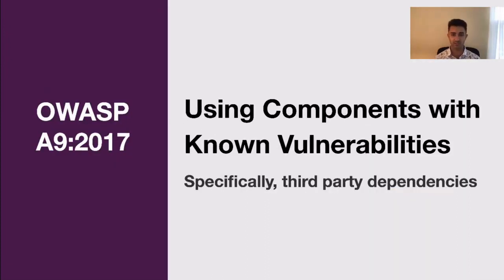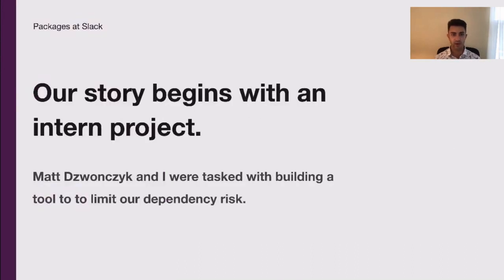Today, we'll be talking about an OWASP top 10 issue: using components with known vulnerabilities. Specifically, we'll be focusing on vulnerability management for third-party dependencies. Our story today begins with an intern project. Matt Dwanzyk and I, who are now full-time engineers at Slack, were interning on the Product Security Foundations team last summer. When we got there, we were given an open-ended project of understanding and limiting our dependency risk. Today, we will walk you through our journey building a tool, and Greg will walk you through how we implemented the tool and built a process around it to actually limit the risk at Slack.